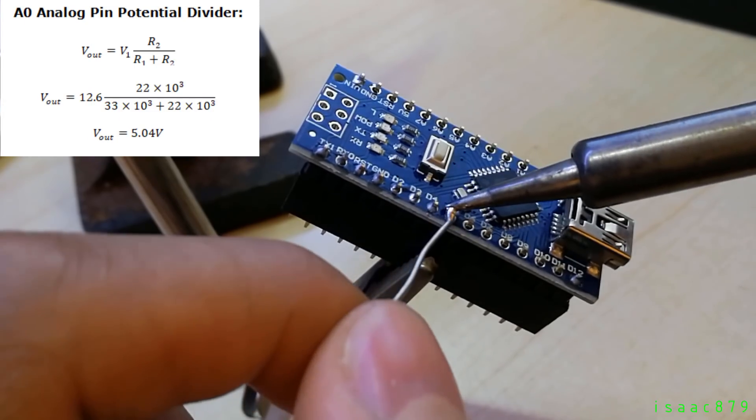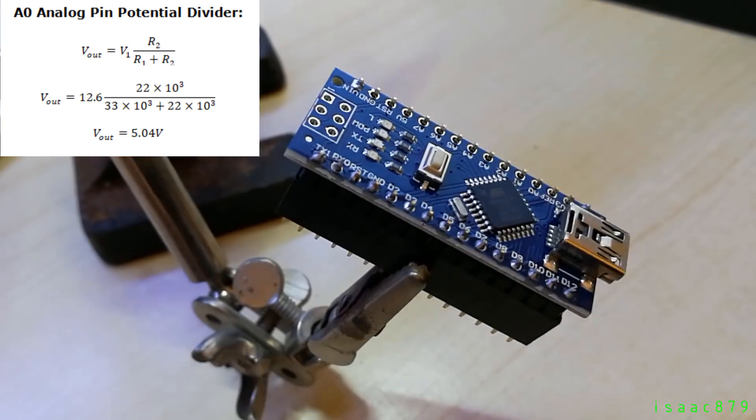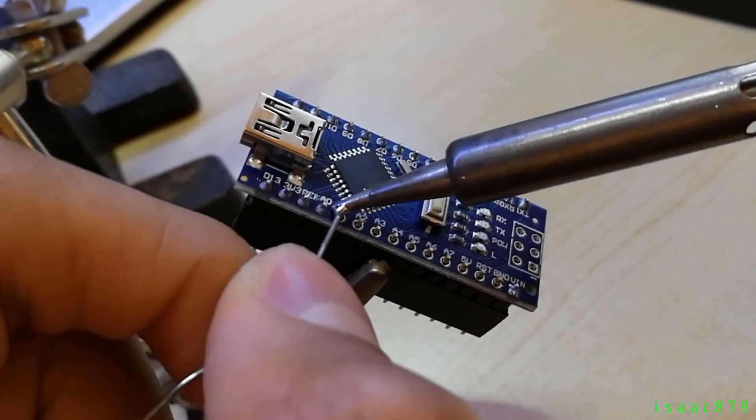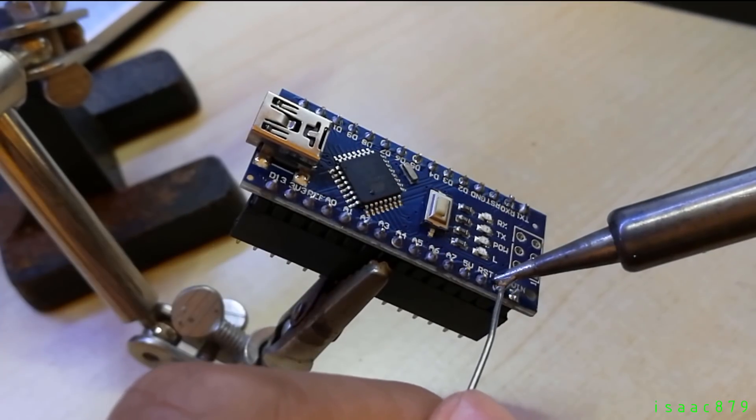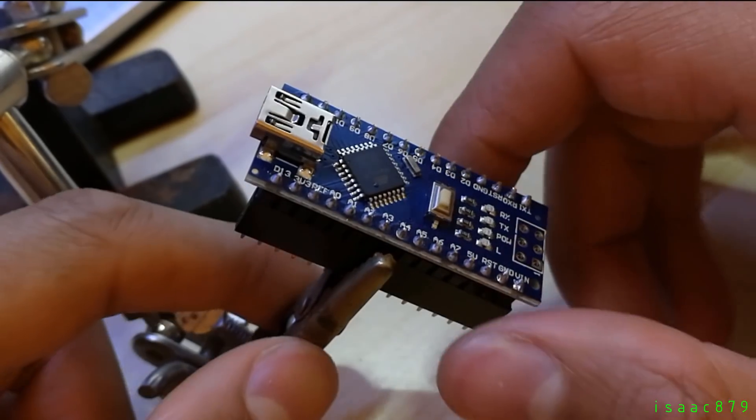Here's the equation I used to calculate the resistor values. The battery feeds into the Nano's VIN pin, which has a 5V linear regulator. The suggested input is 7-12V, but the absolute maximum rating is 20V. As the battery will vary from 12.6V when it's fully charged to 9V when it's drained, it will be fine to feed directly into the VIN pin.